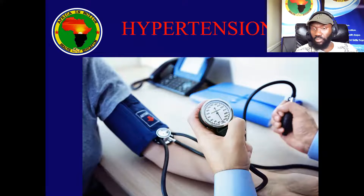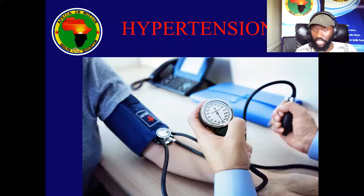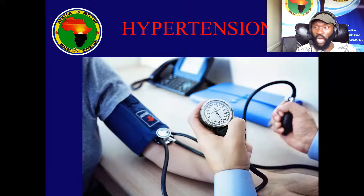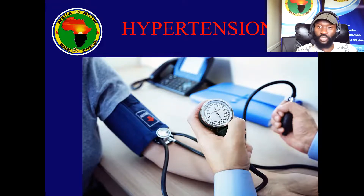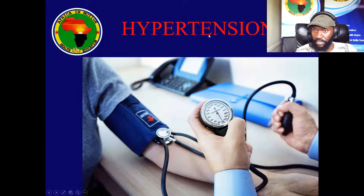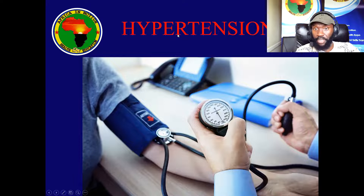Let's go slide by slide without rush, so that we can understand point by point. When we talk about blood pressure or high blood pressure, the medical term is hypertension — which is actually two words in one. 'Hyper' means high, and 'tension' means pressure. So hypertension means high pressure. If it were 'hypo' it would be low, but 'hyper' means high.